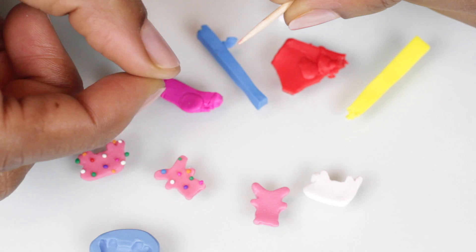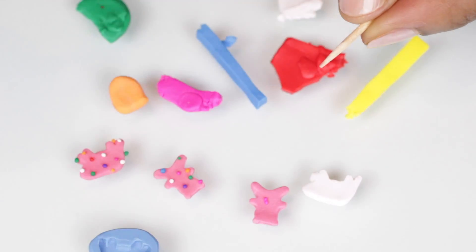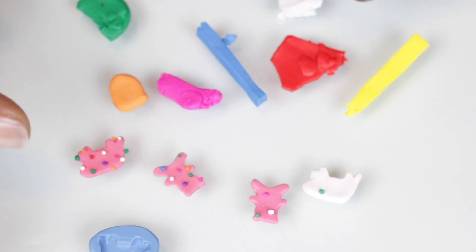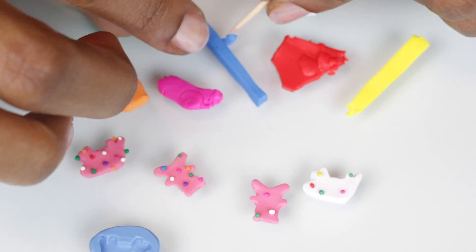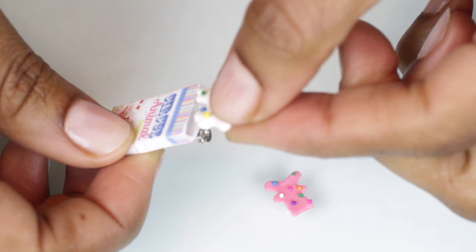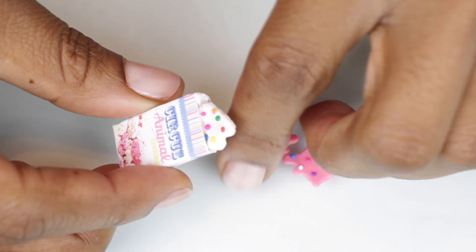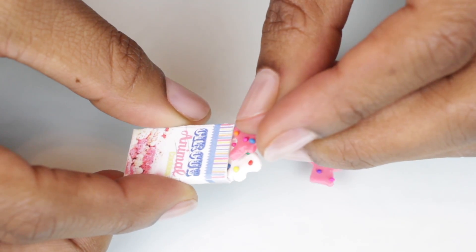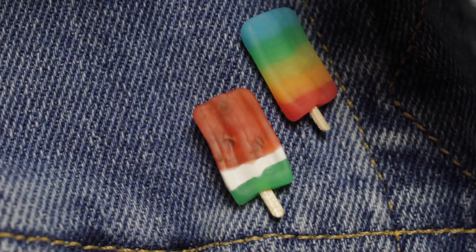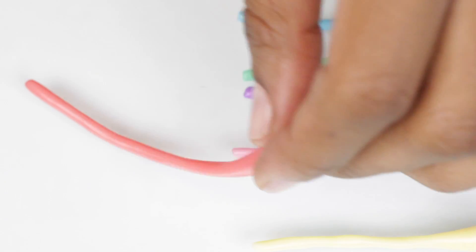Then I'll bake these little cookies and glue them into the box. I mixed all the rainbow colors with translucent clay just like this. I'm going to start by making this little rainbow popsicle.